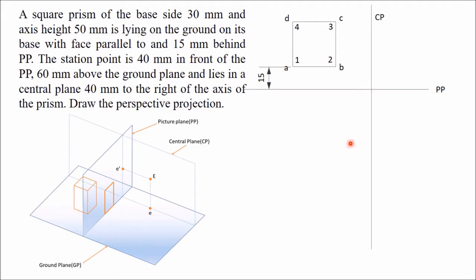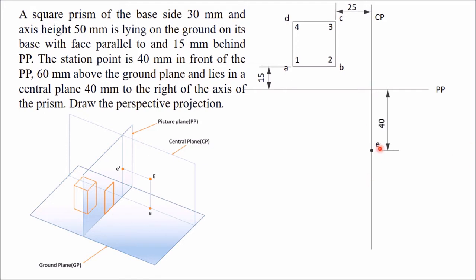Now draw the central plane. When viewed from top it appears as a line perpendicular to the picture plane. The distance of this central plane from the center of the square is 40mm, so from the near side the distance works out to 25mm. Once you have the central plane, draw the top view of the observer's eye (station point) at a distance of 40mm from the picture plane, and mark this point as 'e'.